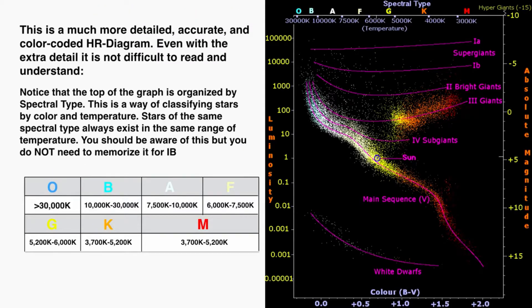This picture on the right is a much more detailed, accurate, and color-coded HR diagram, and even with the extra detail it's not too difficult to read and understand. I can see that I have that main sequence of stars going up into the left, a patch of white dwarfs on the bottom left, giants on the top right, and supergiants on the top. The axis on the left measures luminosity in terms of multiples of the sun's luminosity, and on the x-axis listed on top you can see temperatures listed.